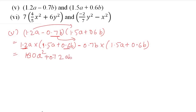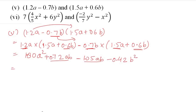Then 0.7 × 1.5: 7 × 15 = 105, with 2 decimal places = 1.05ab (negative, so -1.05ab). And 0.7 × 0.6: 7 × 6 = 42, with 2 decimal places = 0.42b².